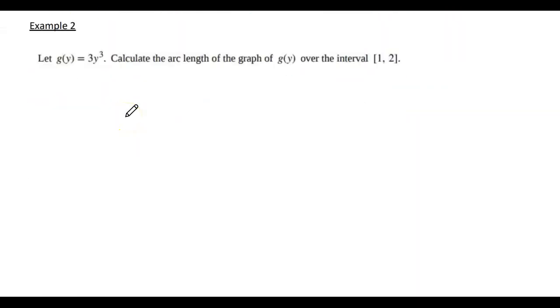All right, let's look at example number two. So this one's already defined for y for us. That's really nice. Let g(y) be 3y cubed. And let's go ahead and take the arc length of g(y) from 1 to 2. So everything here is in terms of y. I'm going to find g prime of y, and that's going to give me 9y squared.